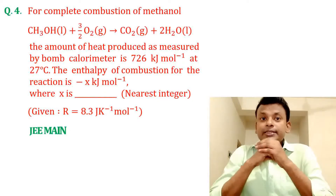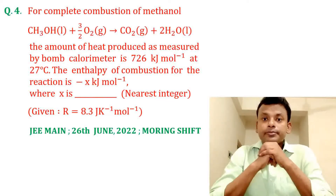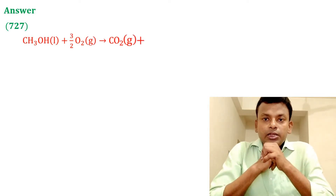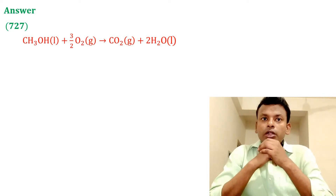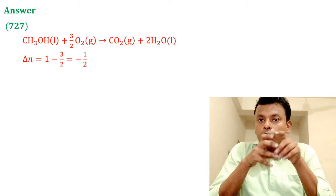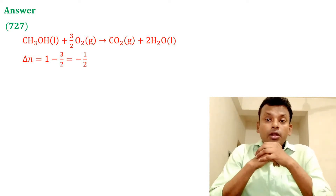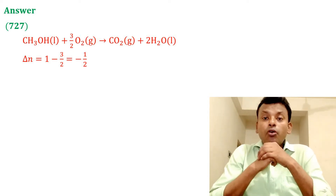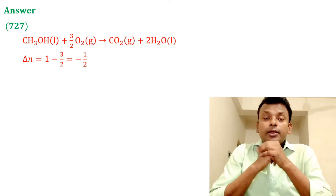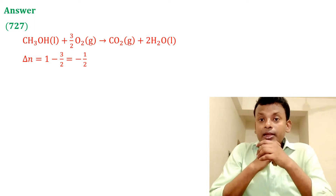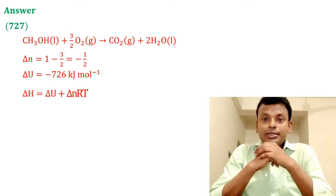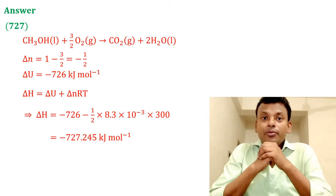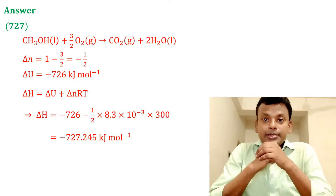This question was set in JEE Main 26th June 2022 morning shift. Answer is 727. For the reaction CH₃OH + 3/2 O₂ → CO₂ + 2H₂O(l), Δn equals the coefficient of gaseous products minus gaseous reactants: Δn = 1 − 3/2 = −1/2. ΔU is given as −726 kJ/mol. Using ΔH = ΔU + ΔnRT and putting in all values gives ΔH = −727.245 kJ/mol, so x = 727.